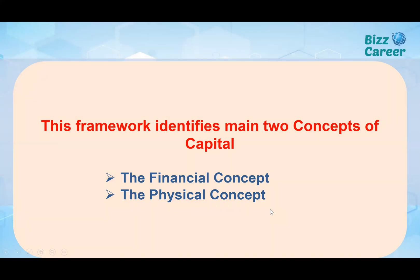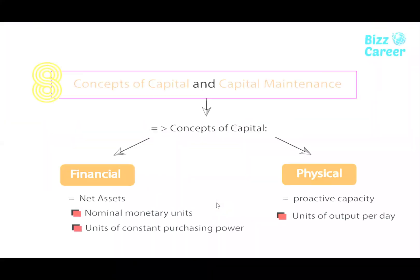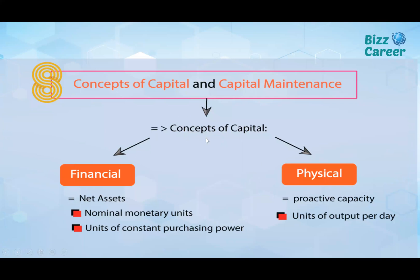This framework identifies two main concepts of capital: the financial concept and the physical concept. Under the financial concept, we consider the investment in net assets, where net assets mean owner's equity or net worth. This is expressed in nominal monetary units and units of constant purchasing power.